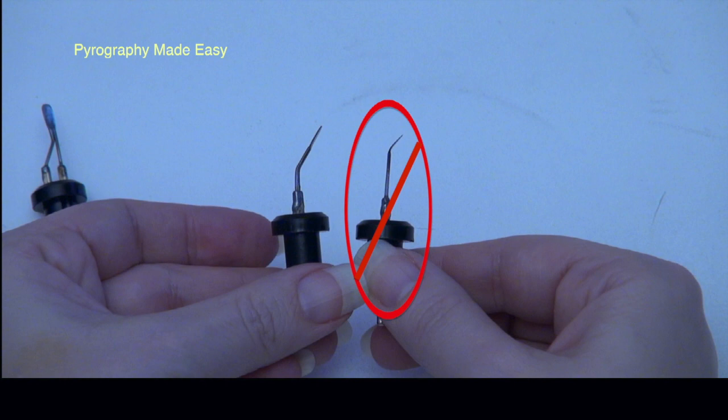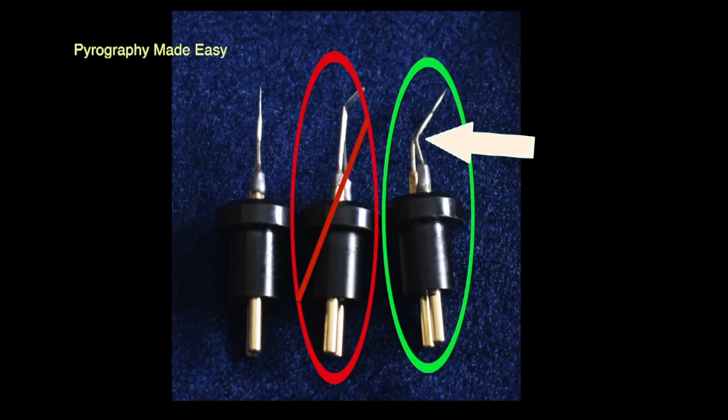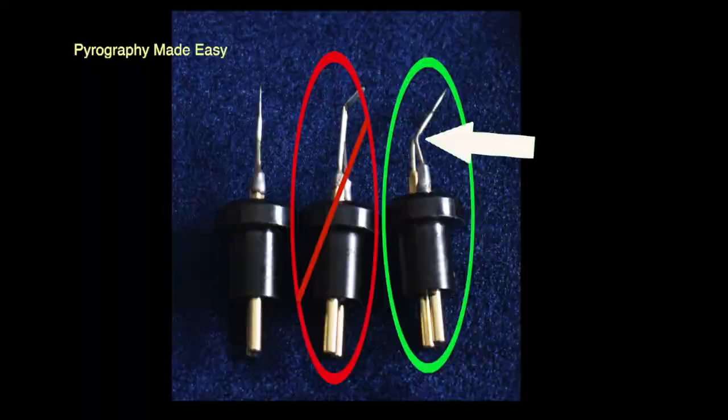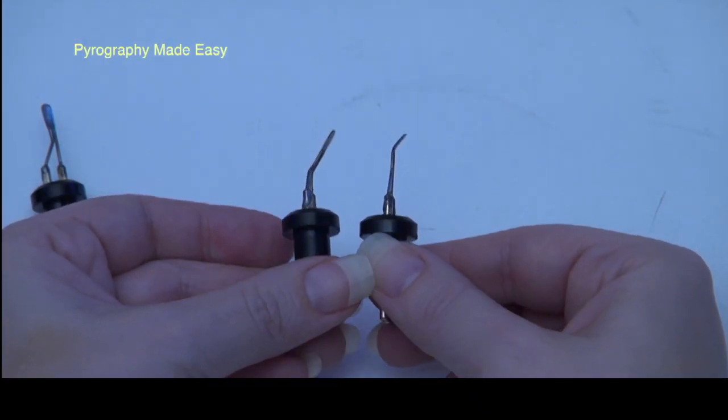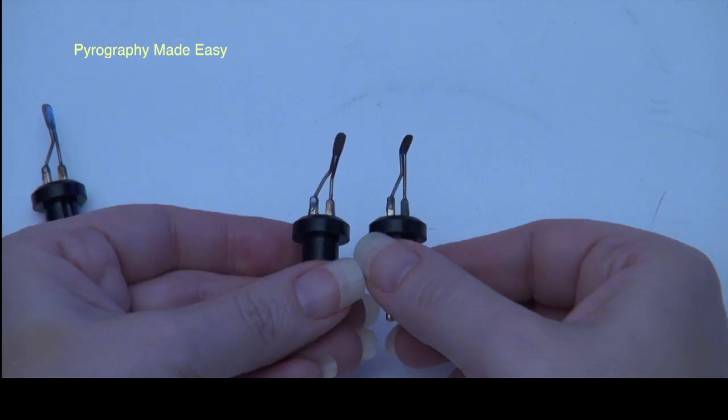I do not recommend doing what I did, as you can easily break the end of the pen tip off. If you choose to bend your own pen tips, which I don't recommend, but at least do it the same way that Colwood did. But be aware if you bend your own pen tip, you will void the warranty on that pen tip.